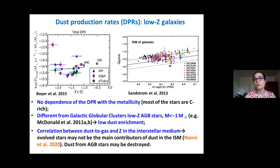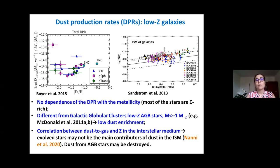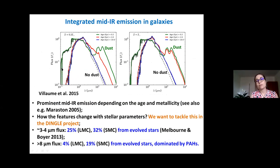We can compare this with the measurement of dust content in the ISM of these galaxies. The gas-to-dust ratio as a function of metallicity shows a clear dependence between the dust-to-gas ratio and metallicity, which does not reflect the flat behavior found for the dust production rate of AGB stars. Possible explanations include Type II supernovae being the main dust source, or dust from AGB stars being destroyed and reprocessed in the ISM.